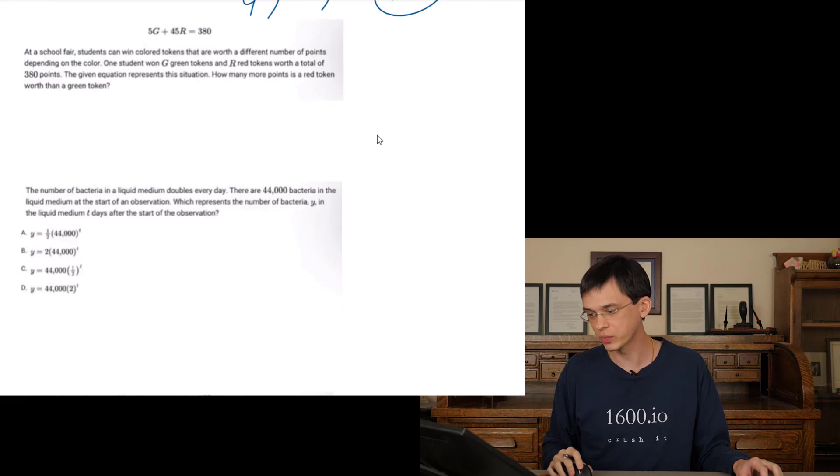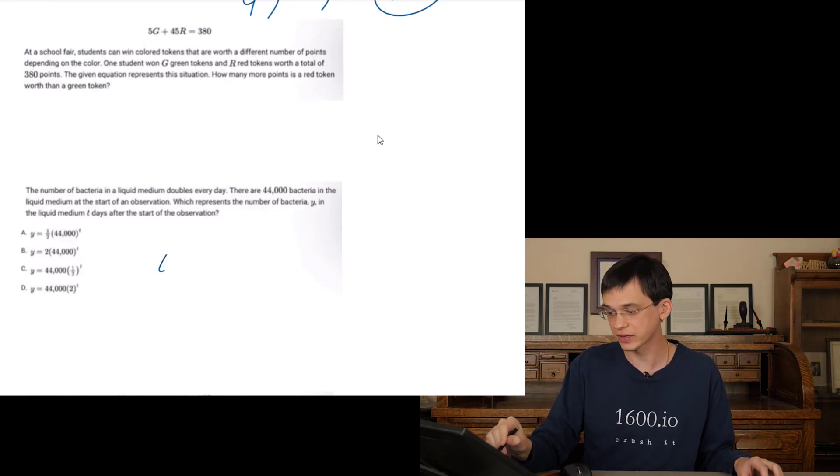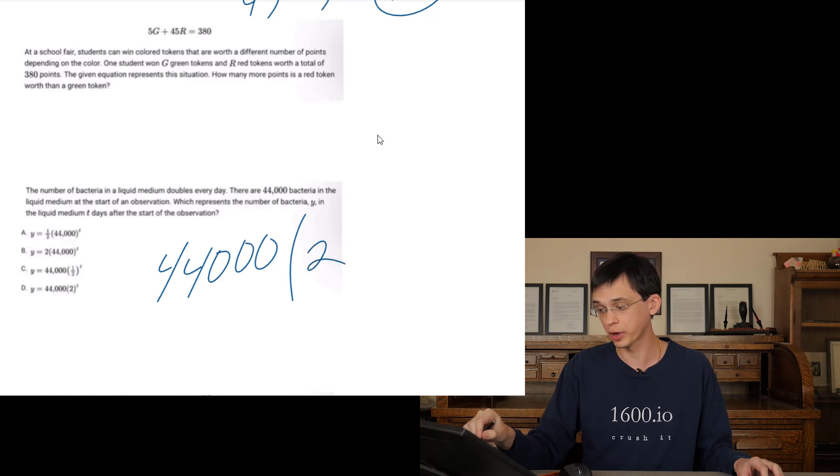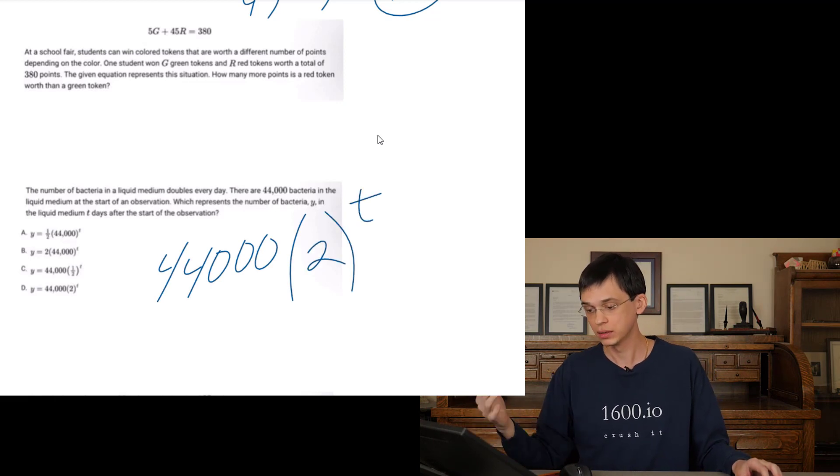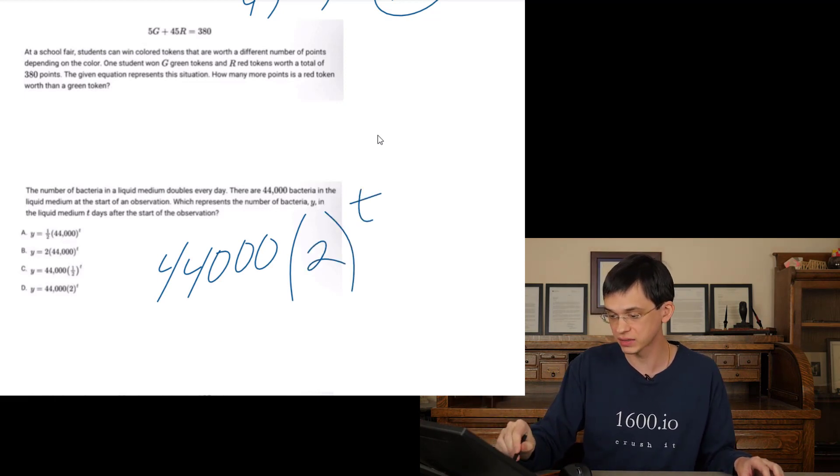The number of bacteria in a liquid doubles every day. So 44,000. So our Y intercept is 44,000. We start with this times, what are we doing? We're multiplying by 2 every T days. That's going to be T days. That's going to be D.